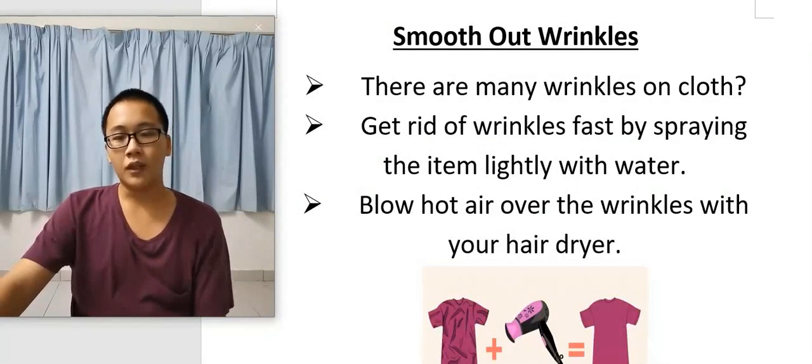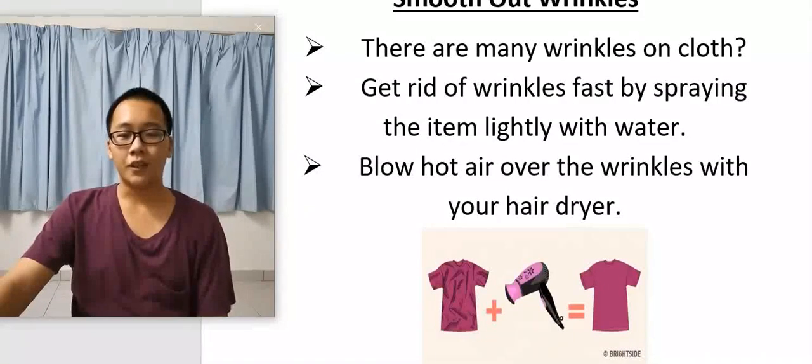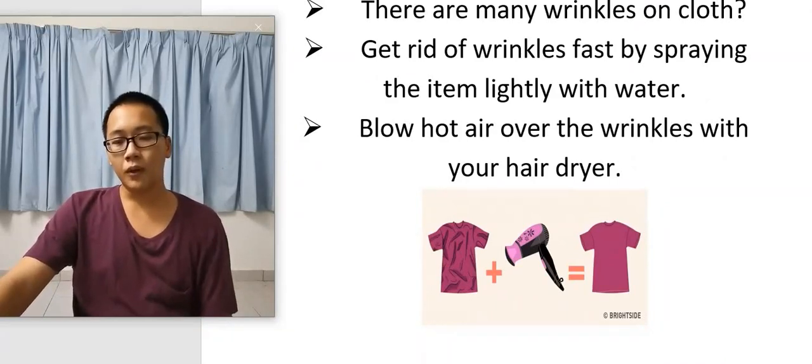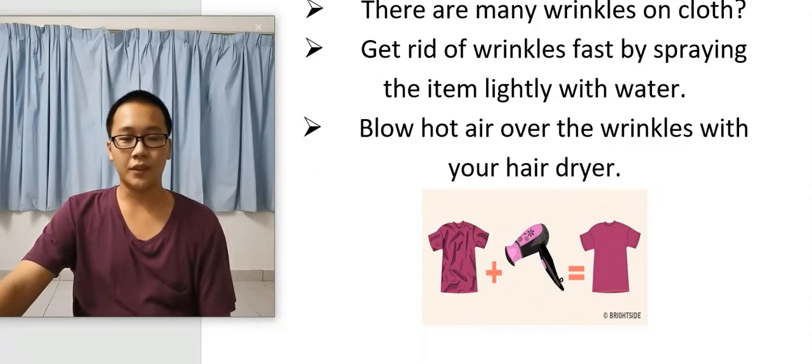Fourth is smooth out wrinkles. If there are many wrinkles on your clothes, get rid of wrinkles fast by sprinkling them with water, then blow hot air over the wrinkles with your hair dryer and watch them disappear.